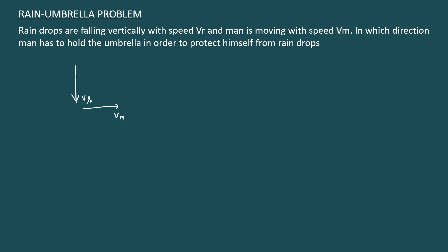The solution is simple. The direction of the umbrella is the direction in which you are experiencing the raindrops. You hold the umbrella in the direction in which you experience the rain. Some other person will hold the umbrella in the direction in which he or she experiences the raindrops. So the direction of the umbrella will be the direction of the rain as experienced by the man.